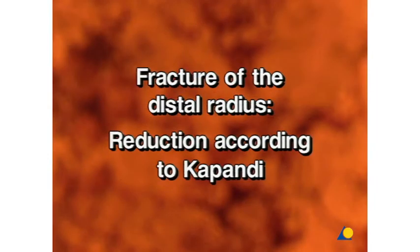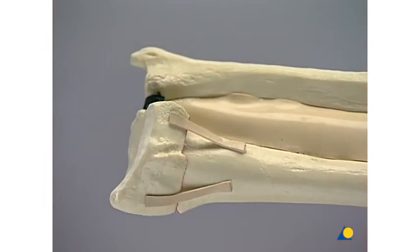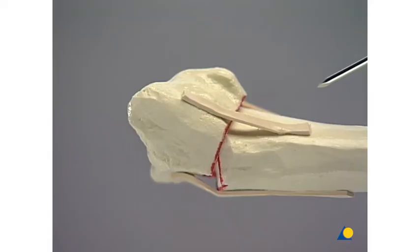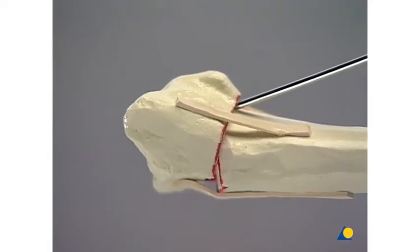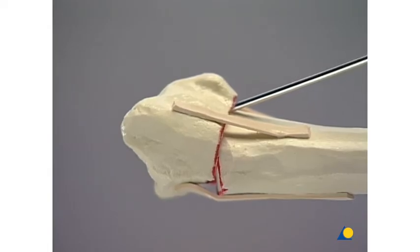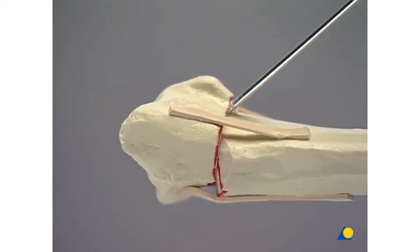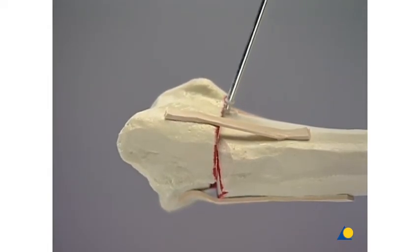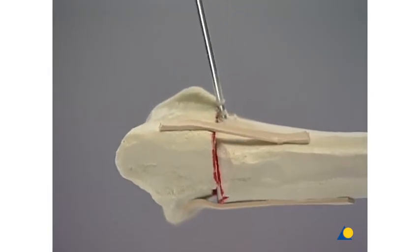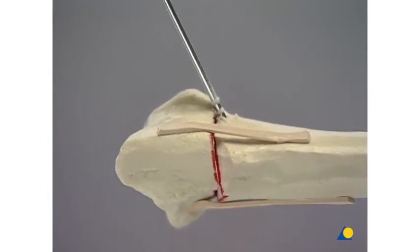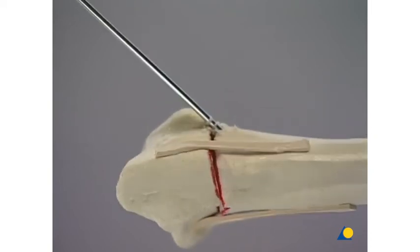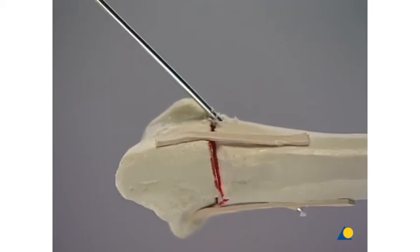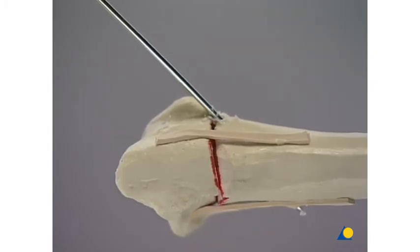Fracture of the distal radius. Reduction according to Kapandji. A K-wire is inserted under image intensifier control into the fracture site on the dorsal side of the radius. The fracture is reduced by simultaneously drilling and tilting the wire in the distal direction. The final fixation is achieved by perforating the far cortex with the same wire.